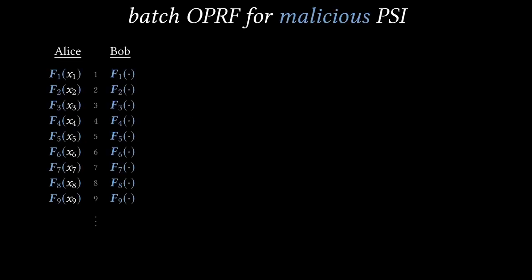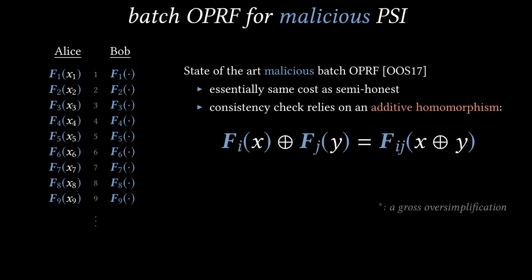Now I'm going to talk about how we overcome this problem. Remember, that batch OPRF is the main building block of the semi-honest PSI protocol. If we want malicious PSI, we will certainly need malicious secure batch OPRF. The state-of-the-art protocol is due to Oru, Orsini, and Shoal. Fortunately for us, it's essentially as efficient as the semi-honest batch OPRF. It achieves malicious security using a consistency check, which takes advantage of a homomorphism property. I'm simplifying things a lot, but the main idea is that XORing the outputs of Fi(X) and Fj(Y) gives the output of another function, that I'll call Fi⊕j(X⊕Y). Here Fi⊕j is a different function from Fi or Fj, but it's something that Bob can also compute on any input. The outputs of Fi⊕j also look random to Alice, except for the one output that she can compute through this homomorphism property. Now this extra homomorphism property is the key to our malicious PSI protocol.